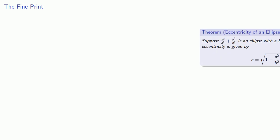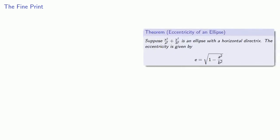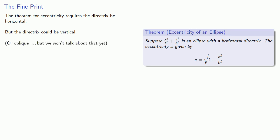So let's check the fine print of our theorem. The supposition here is that it's an ellipse with a horizontal directrix. And so our theorem for eccentricity requires the directrix to be horizontal, but remember the directrix could be vertical or even oblique. But we won't talk about that yet, because that makes things much more complicated.